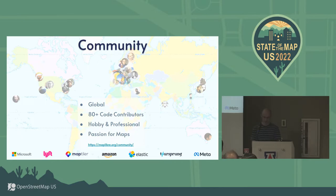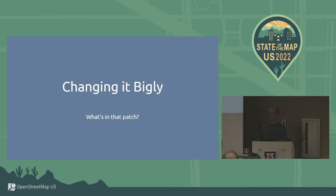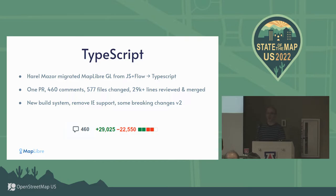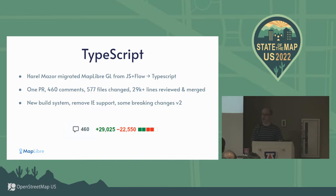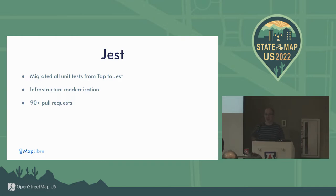Hobby and professional contributors - it's fun. The first major patch was TypeScript: we took all the GL JS code and made it GL TS. It was only 577 files changed in one pull request - that's okay, right? Close to 30,000 added lines, over 22,000 removed. It was quite a discussion - 160 comments in one pull request. We did remove Internet Explorer support - I know some of you still miss it. We also migrated to Jest, a proper test system, rather than the old one that shall not be named.